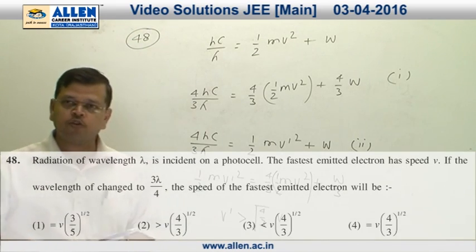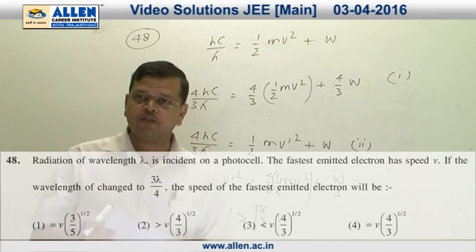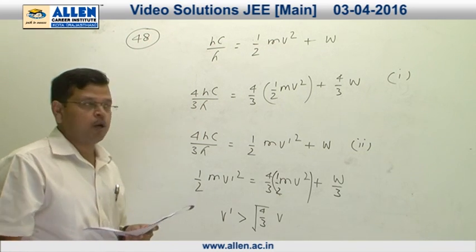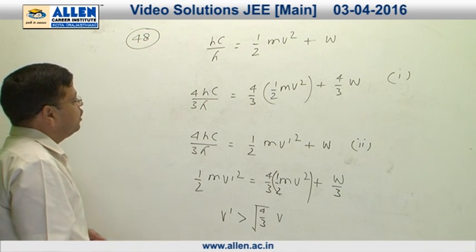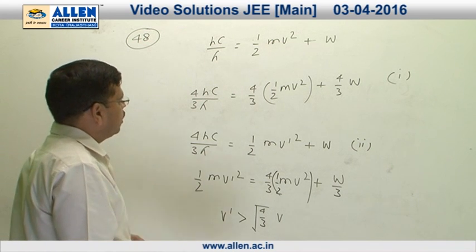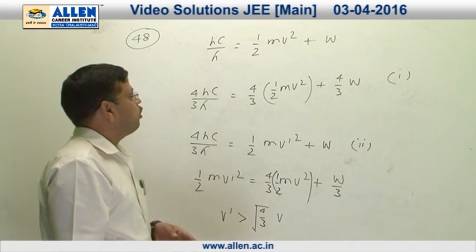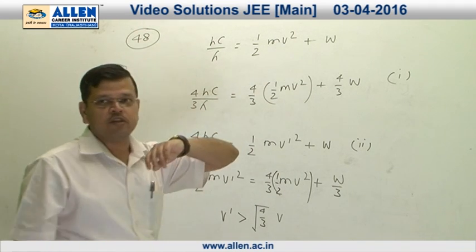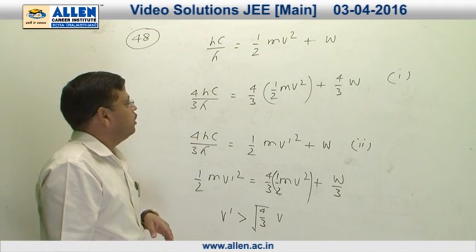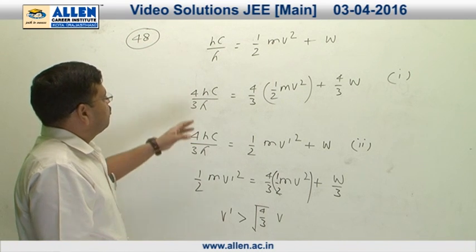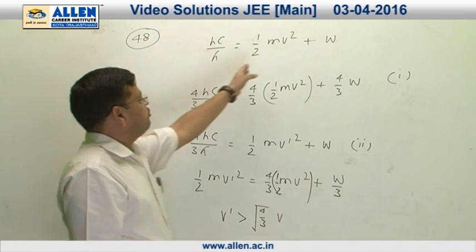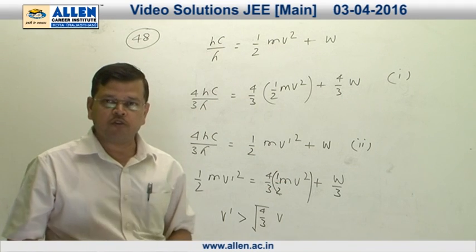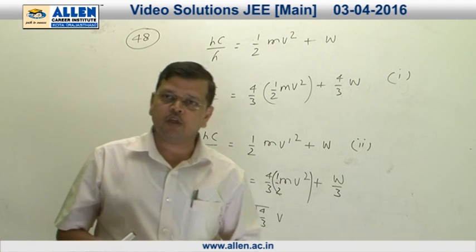Question number 48. This question is based on the photoelectric effect. Radiation of wavelength lambda is incident on a metal surface and the kinetic energy of the fastest moving electron is half mv squared. From energy conservation: hc/lambda = (1/2)mv² + W, where W is the work function of the given metal.